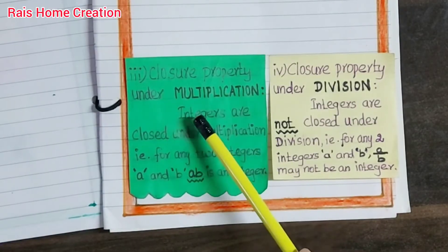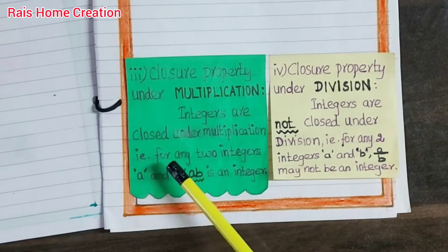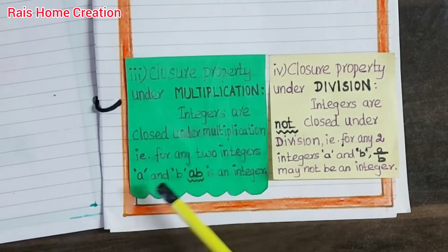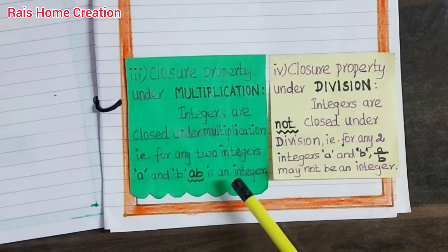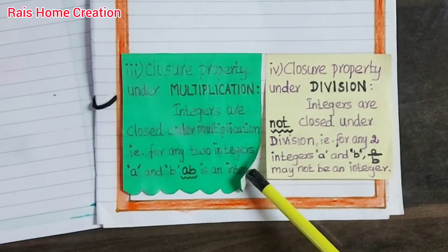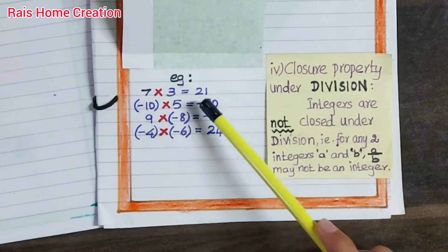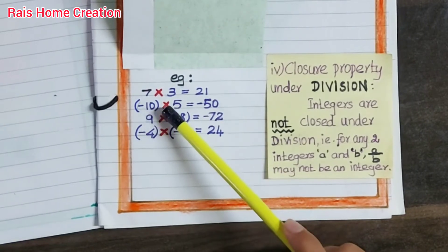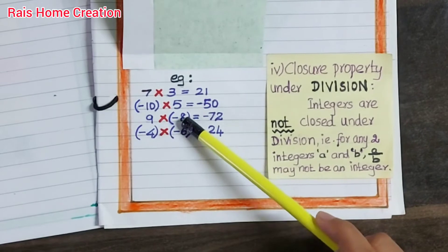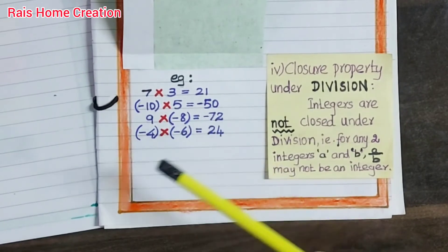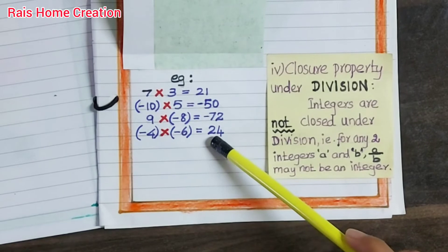Integers are closed under multiplication — that is, for any two integers A and B, A times B is an integer. For example: 7 into 3 is 21; minus 10 into 5 equals minus 50; 9 into minus 8 equals minus 72; minus 4 into minus 6 equals 24.